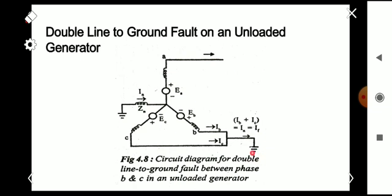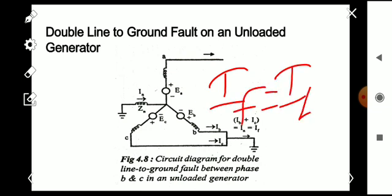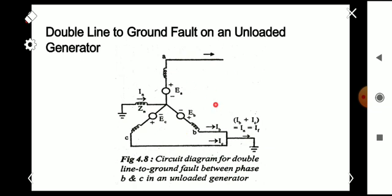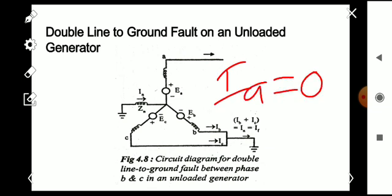Here you can see the circuit diagram for a double line to ground fault on an unloaded star-connected generator having a grounded neutral. The faulted phases are B and C. The fault current IF will be IB plus IC — that is the current flowing through phase B and phase C. Since the generator is unloaded, the current in phase A, IA, will be zero.